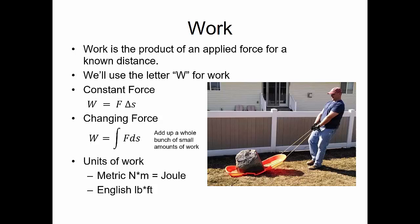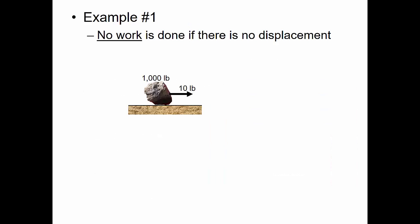Units for work are, in metric, newtons times meters — force times distance — which is a joule. In the English system, it's pound-feet. Note that no work is done if there's no displacement. If I have a thousand-pound rock and I pull on it with ten pounds of force and the rock doesn't move, the work is force times change in position: ten pounds times zero feet — so zero work is done.